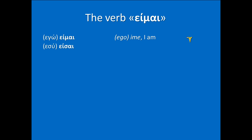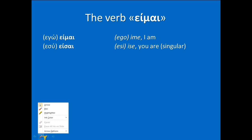We go on. ESE means 'you are' but singular. In English 'you are' can mean a single person or a group of people, but in Greek it's different. ESE is for a single person, and this is the singular form.